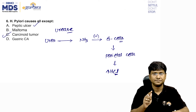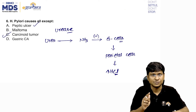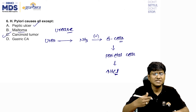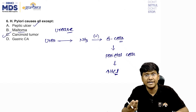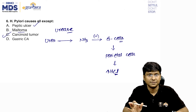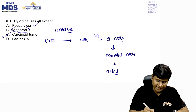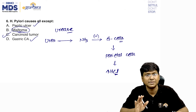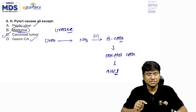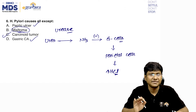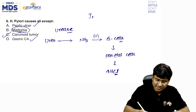H. pylori is a Type 1 carcinogen. It can cause MALToma — mucosa-associated lymphoid tumor — and is also associated with gastric carcinoma. The one condition not associated with H. pylori is carcinoid tumor. The investigation of choice for H. pylori is the urease test, which is an invasive procedure.